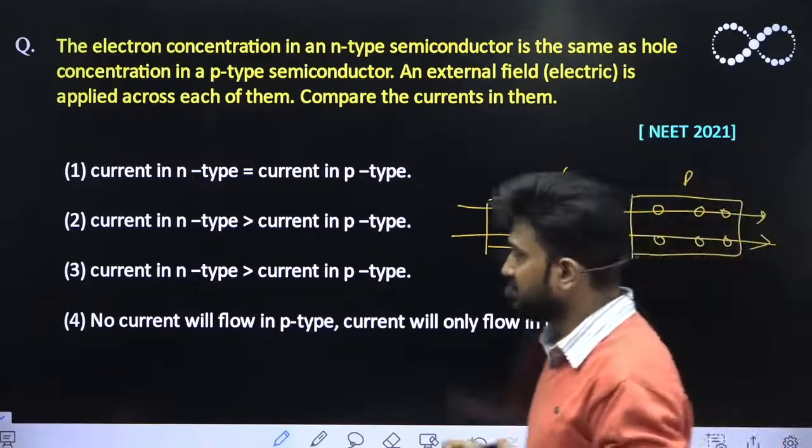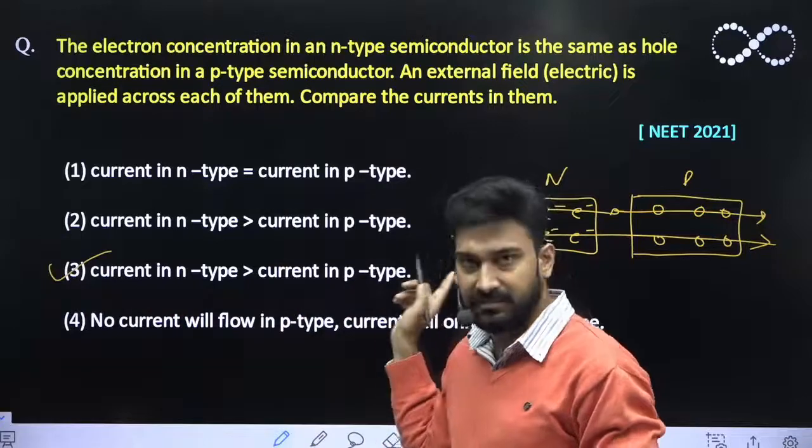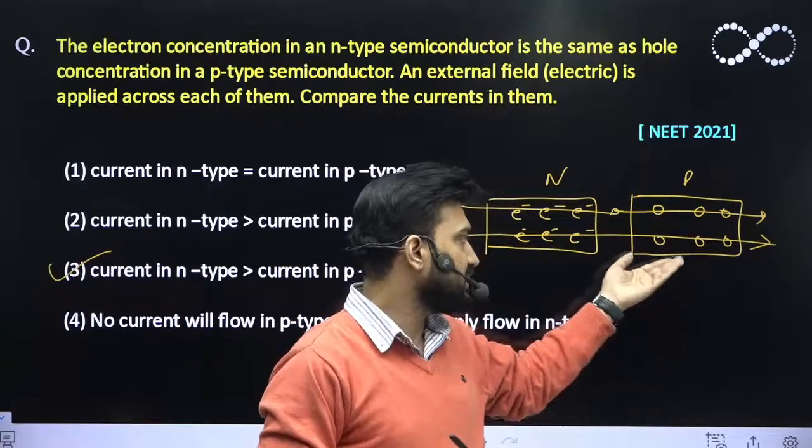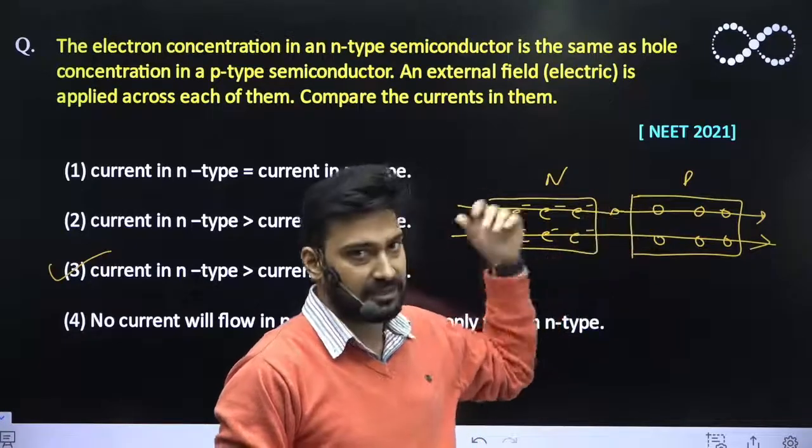So that means the current in n-type should also be greater than the current in p-type. So which option is correct? So that means the current in the n-type must be greater than the current in p-type only because the mobility of electron is much much greater than the mobility of holes present in p-type semiconductor.